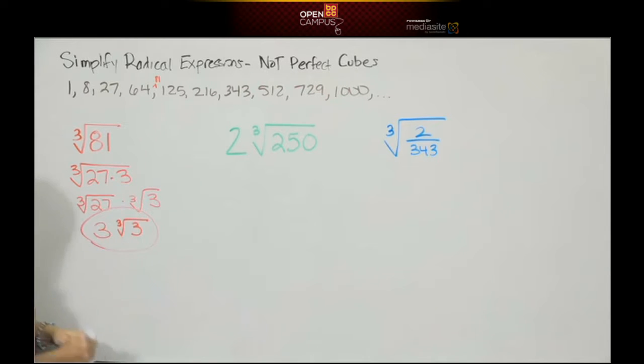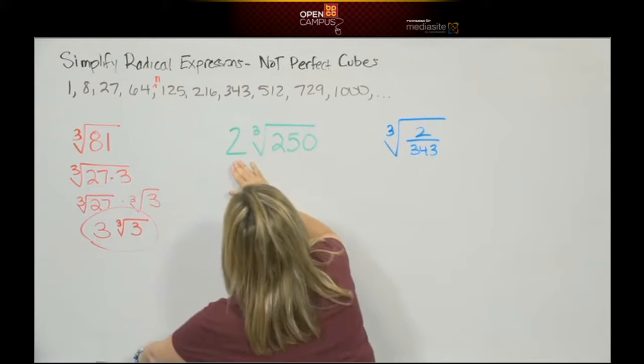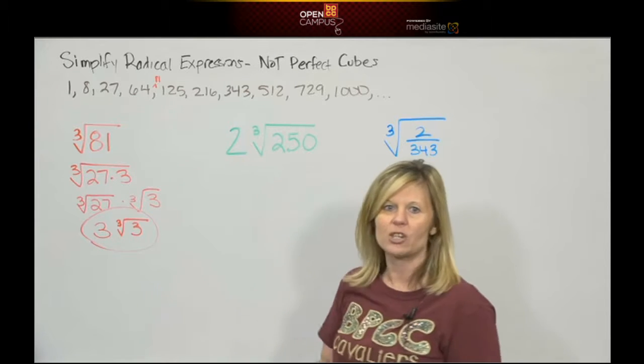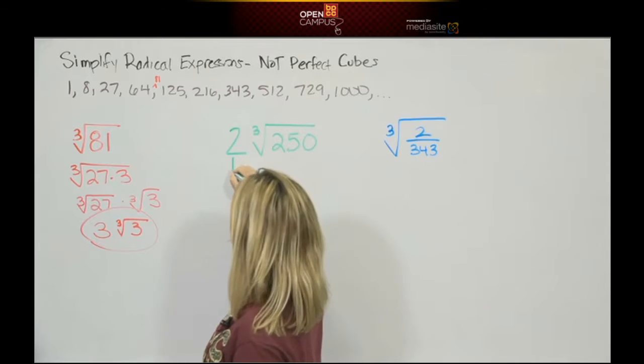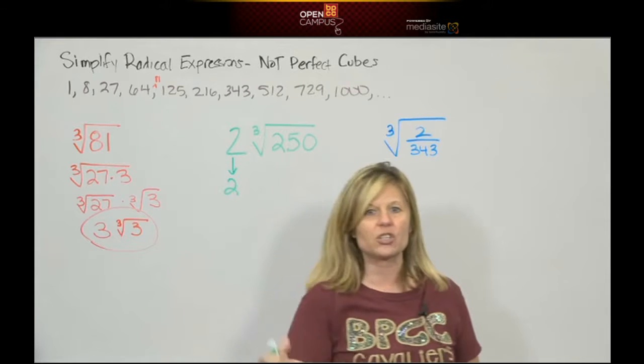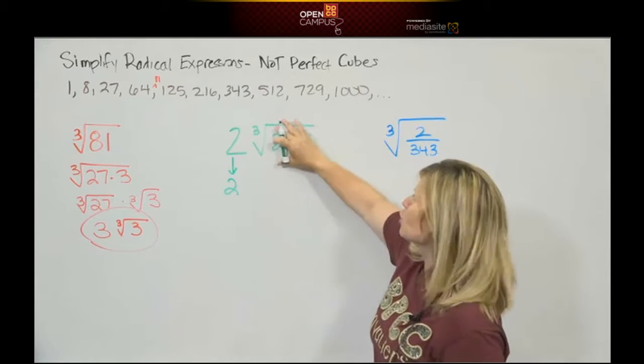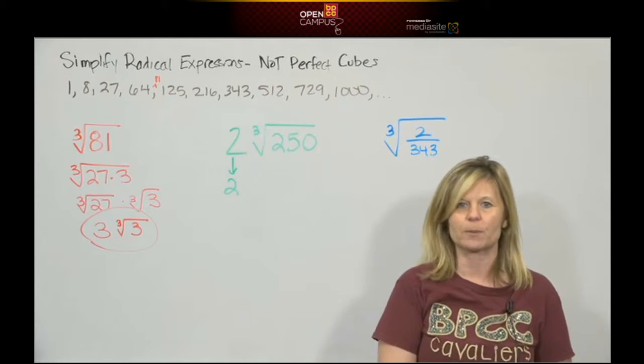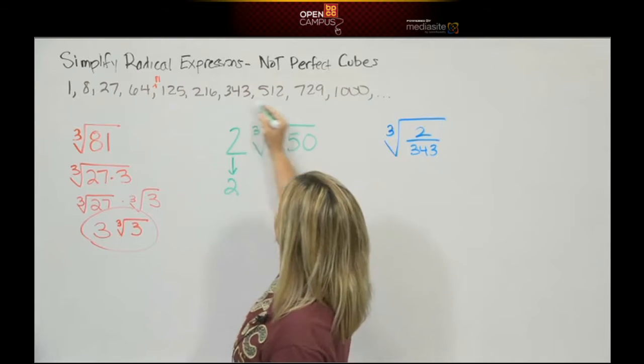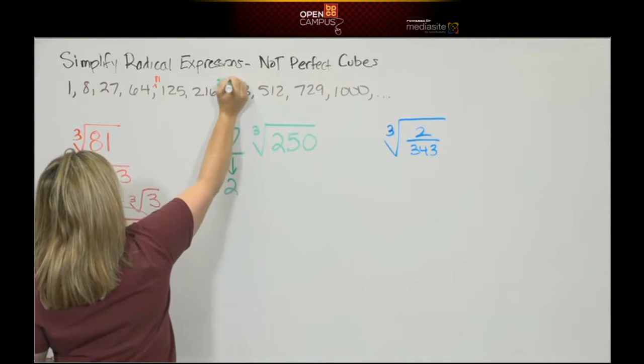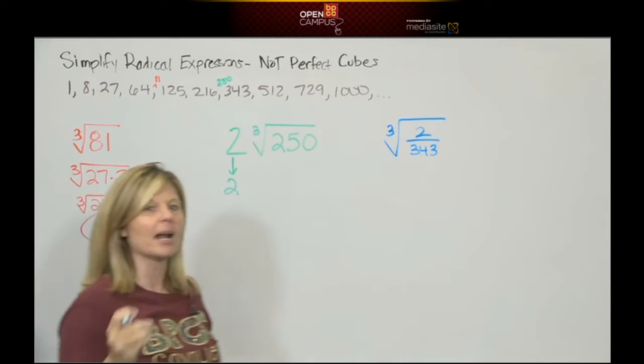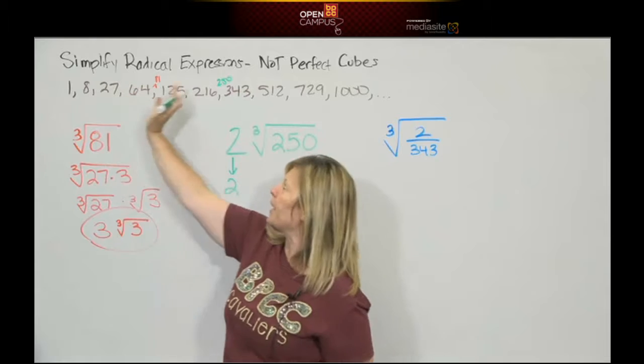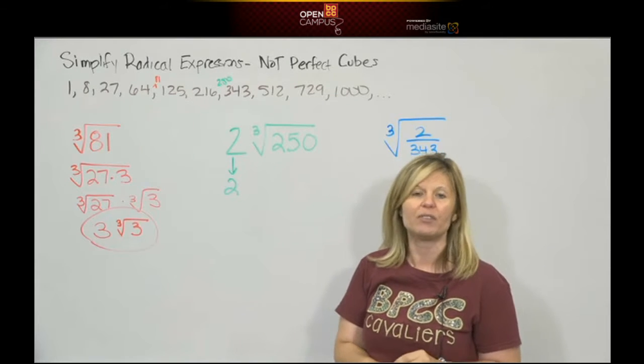2 times the cube root of 250. 2 is a whole number connected by multiplication so there's nothing to do with it. We're supposed to always work inside a symbol first, so we're going to deal with the cube root of 250 first. 250 is not on this list. 250 is not a perfect cube, so look at your list. What is the biggest perfect cube number that will divide into 250?